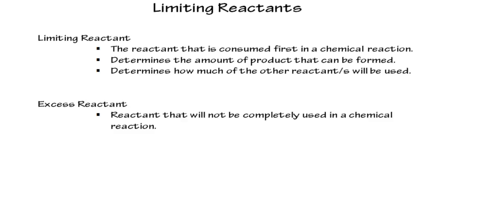The excess reactant is not completely used up, and sometimes this is a good thing. In some reactions, we may have one expensive reactant, like a silver compound, and we want to make sure all of it gets reacted. So we put the other reactant in excess to ensure the silver compound is fully consumed. Often in combustion, we have excess oxygen — we want to make sure we completely burn the carbon compound, and there's plenty of oxygen available in the air. But we'll run out of our organic compound, leaving oxygen in excess.